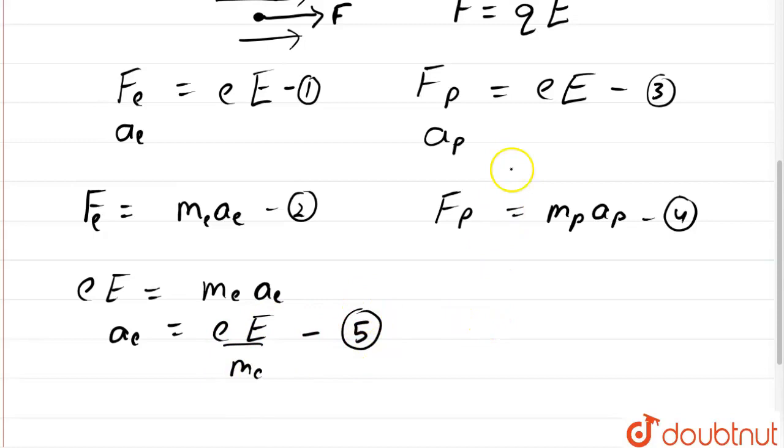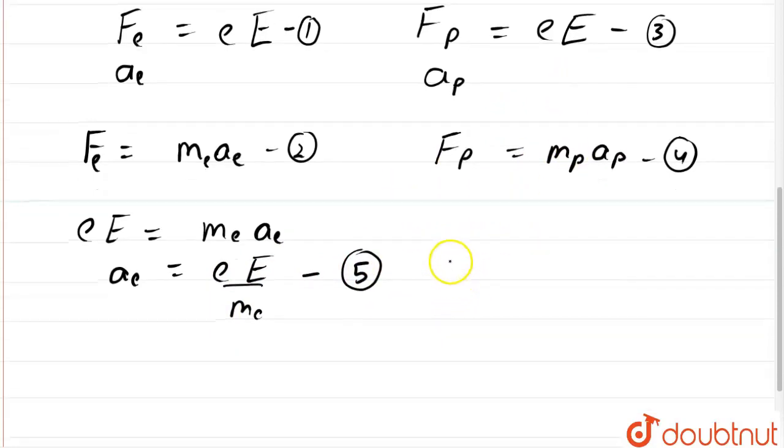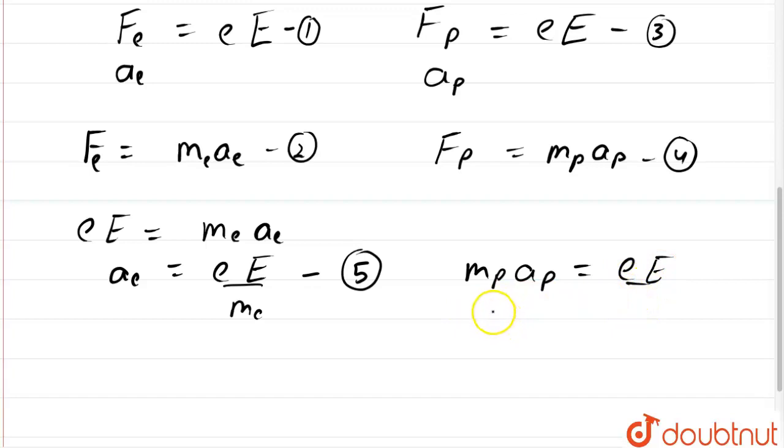And from these 2 and 4, we can write acceleration of proton ap is equal to eE upon mp. Let us name this equation 6.